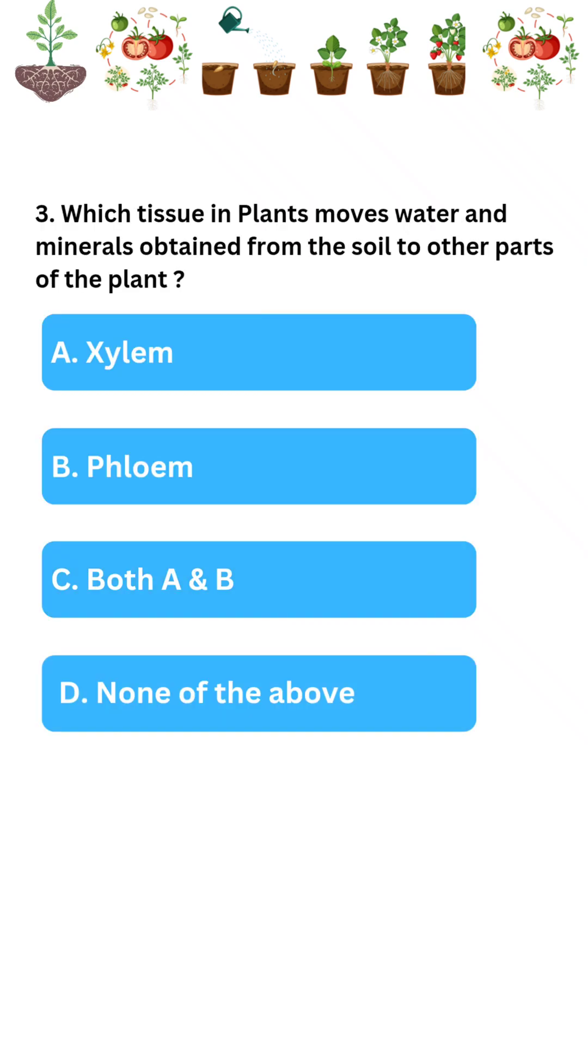Which tissue in plants moves water and minerals obtained from the soil to other parts of the plant? Xylem is the correct answer.